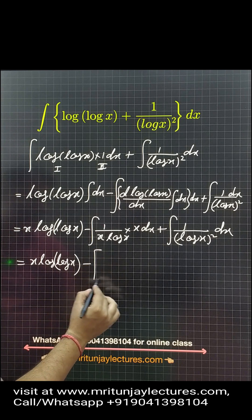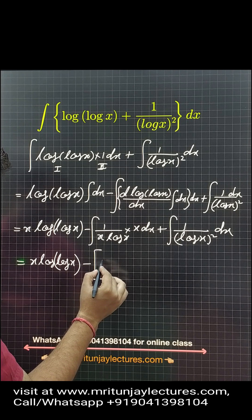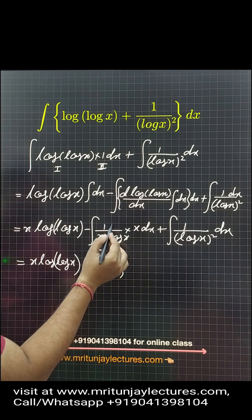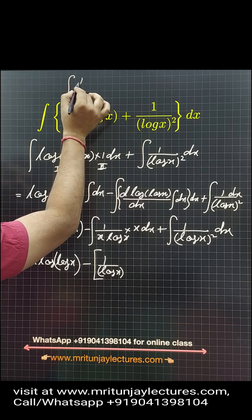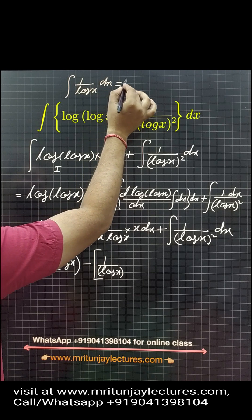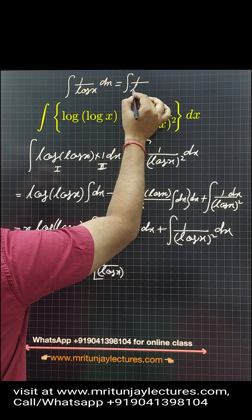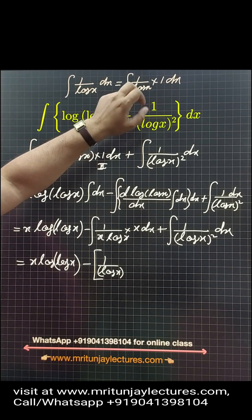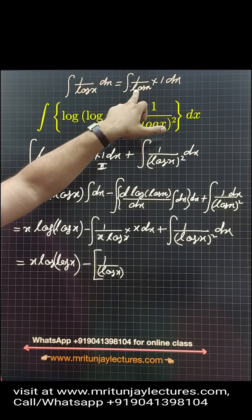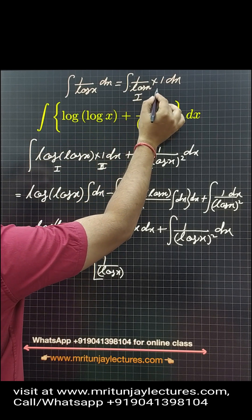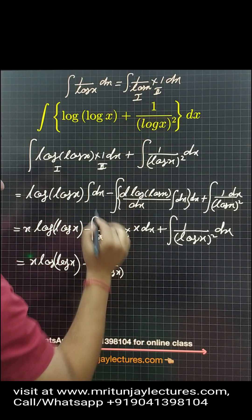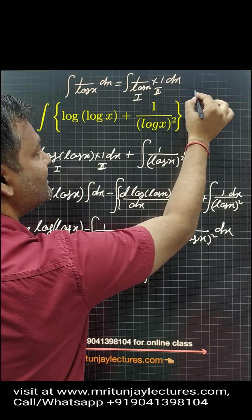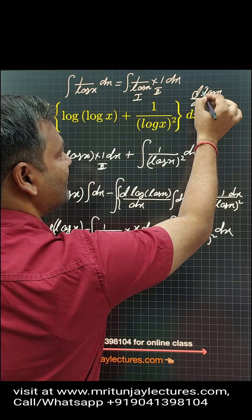Here we apply x·log(log x), and after x cancels we get simply 1/log x. Now applying integration by parts again with 1/log x as the first function. The second function is simply 1, so we use: first into integration of 1 dx, that is simply x, minus the differentiation of (log x)^(−1).